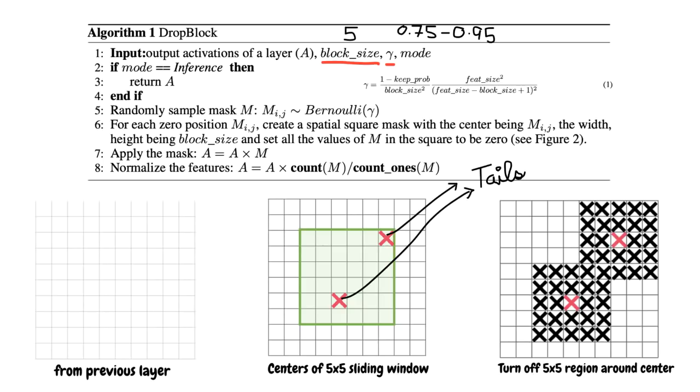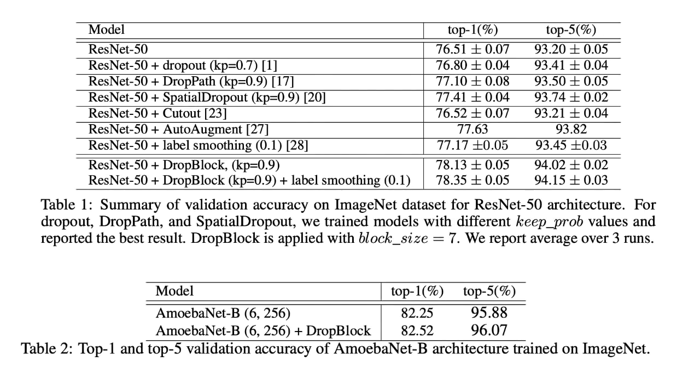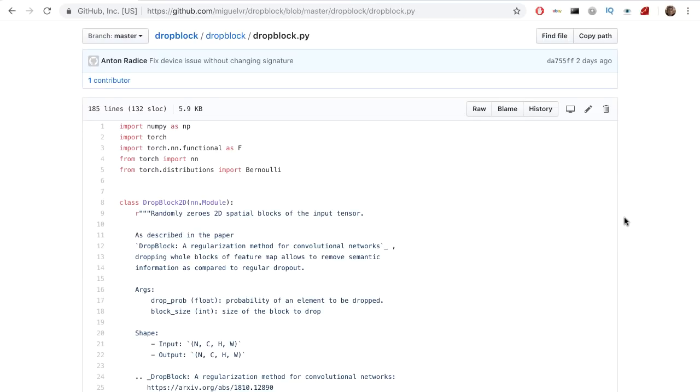The results when applied to different architectures are significant. We see up to a 2% improvement in various convolutional network architectures like ResNet and AmoebaNet. Let's take a look at some PyTorch code to implement this.